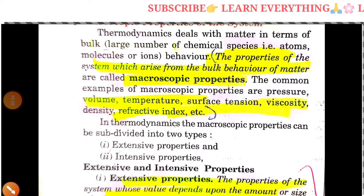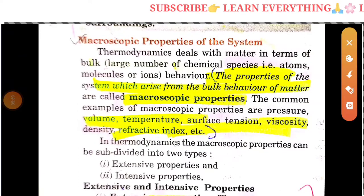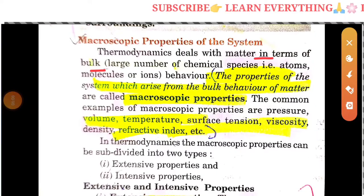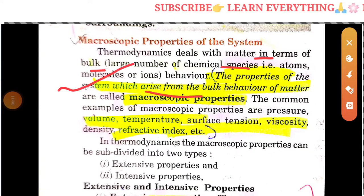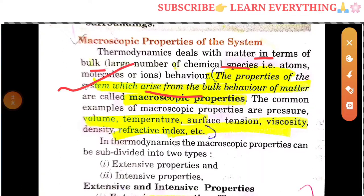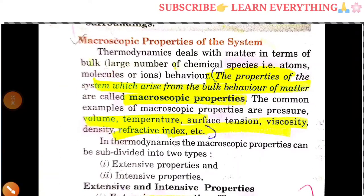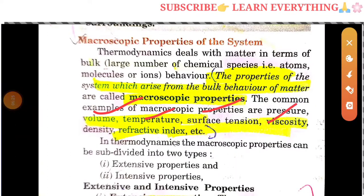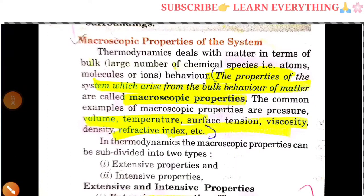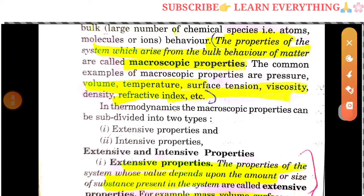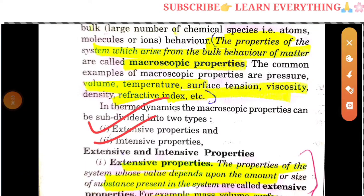Thermodynamics deals with matter in terms of bulk — a large number of chemical species, atoms, and molecules. The properties of a system which arise from the bulk behavior are called macroscopic properties. Examples include volume, temperature, surface tension, viscosity, density, and refractive index. In thermodynamics, macroscopic properties are classified into intensive and extensive properties.